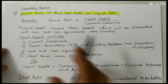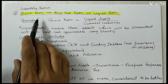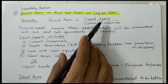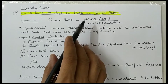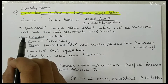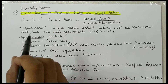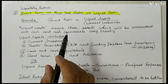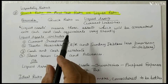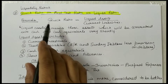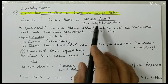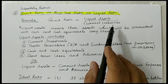Next is Quick Ratio, also called Liquid Ratio. Quick Ratio indicates whether the firm is in a position to pay its current liabilities within a month or if they have to be paid immediately. The formula for calculating Quick Ratio is Liquid Assets divided by Current Liabilities.